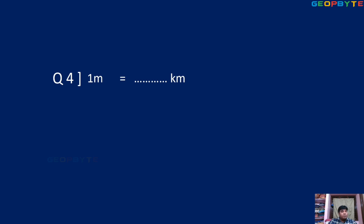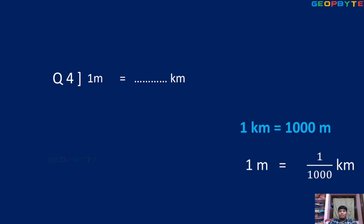Fourth question — this is a previous year question. 1 meter is equal to how many kilometers? We already discussed this point. Answer: 1 by 1000 kilometer.